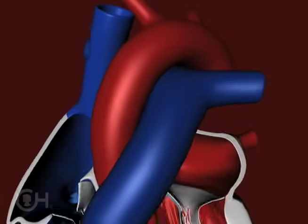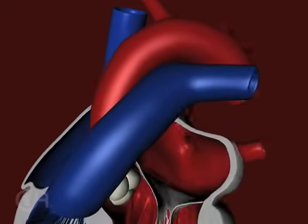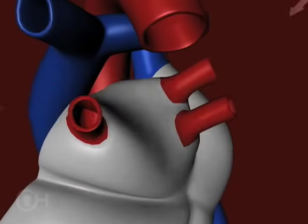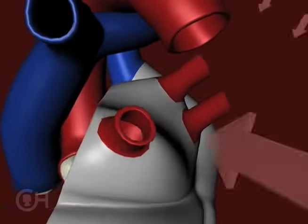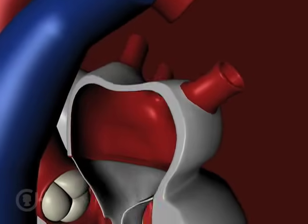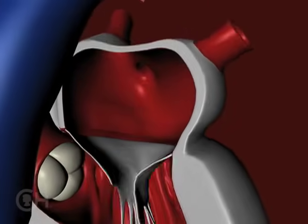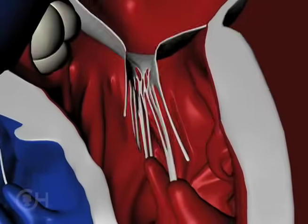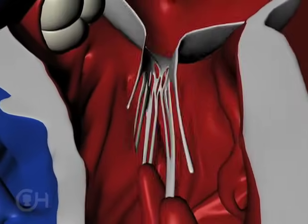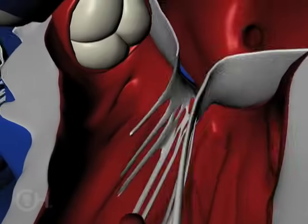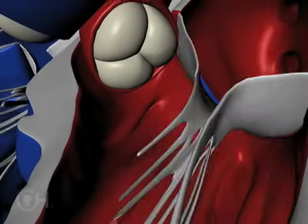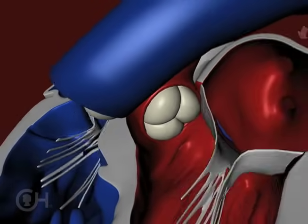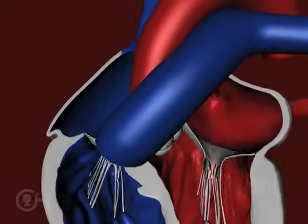As that red blood cell makes its way through the lung, it returns through the pulmonary veins to the left atrium. That blood is now oxygenated — it's picked up oxygen — then goes across the mitral valve into the left ventricle, which does most of the work in terms of delivery of blood flow to the body. That blood cell is now ejected into the aorta to some organ, muscle, or skin in the human body.